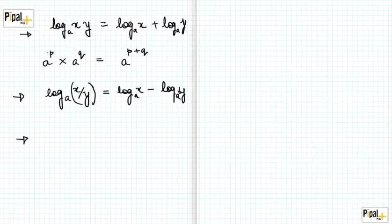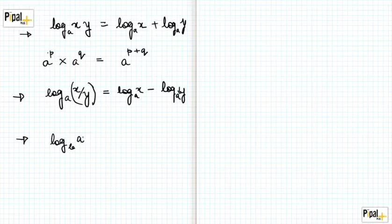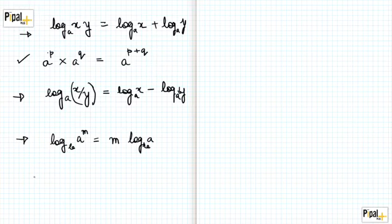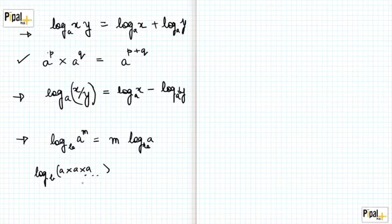The next property of logs says that if you have a logarithm of the form log base b of a to the power m, this is going to be equal to m times log of a to the same base b. This can be derived from the product property. The left hand side is equal to log base b of a times a times a, continuing to multiply this m times.